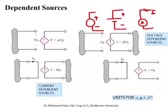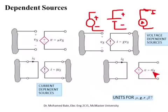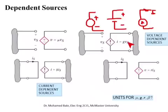Analogously, we have a current controlled current source (CCCS), where a current source creates a current proportional to a controlling current in another branch — i = beta * i_controlling — where beta is a dimensionless constant. There is also a current controlled voltage source (CCVS), where the voltage difference it creates is proportional to a current flowing somewhere else in the circuit.